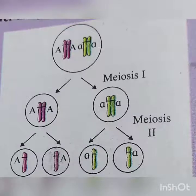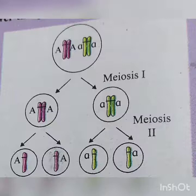The important points of the chromosomal theory of Sutton and Boveri: chromosomes are present in pairs in somatic or diploid cells. During gamete formation, homologous chromosome pairs segregate and assort independently during meiosis. Each gamete contains only one chromosome from a pair. Hereditary characters are carried by chromosomes, and chromosomes are present inside the nucleus.